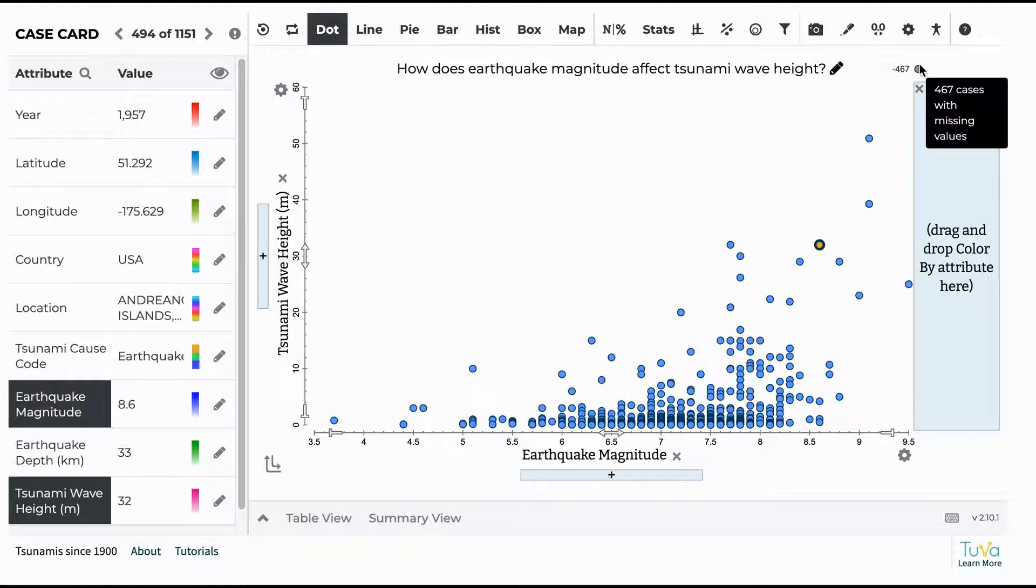The one thing I'll point out is that we also have, out of the whole data set of over a thousand tsunamis since 1900, there's 467 cases with missing values. And this is because in the earlier part of the data set, there wasn't as much monitoring of all the different variables. So the data set's been pulled together from as much information as possible, but some of the data is still missing.